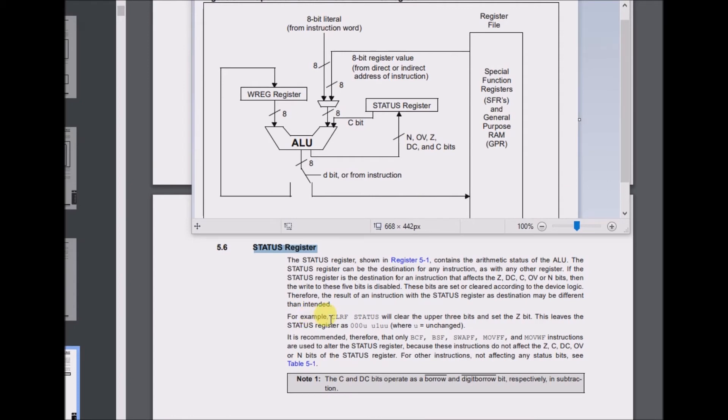For example, the CLRF status instruction will clear the upper 3 bits and set the Z bit. It is recommended therefore that only BCF, BSF, SWPF, MOVFF, and MOVWF instructions are used to alter the status register, because these instructions do not affect the Z, C, DC, OV, or N bits. For other instructions not affecting any status bits, see Table 5-1. Note: the C and DC bits operate as borrow and digit borrow bits respectively in subtraction.